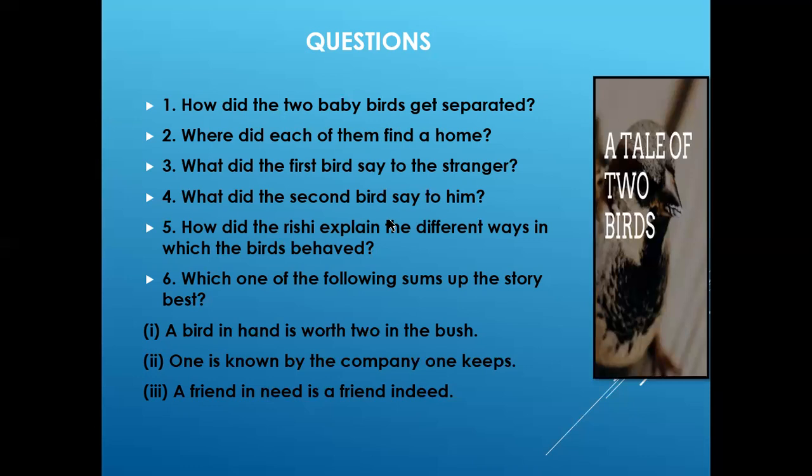What did the second bird say to the stranger? The second bird welcomed the king to the ashram. He requested the stranger to go inside the ashram, take some rest and make himself comfortable. He further added that the first bird was his brother who had made friends with robbers, so he does not talk to him anymore and he talks like the robbers.